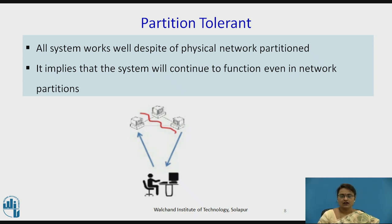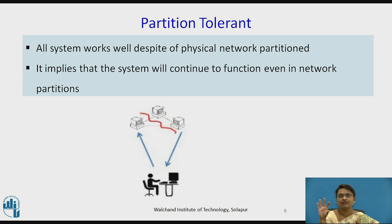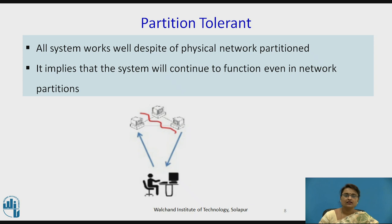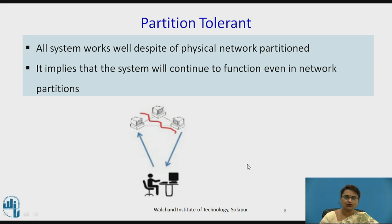Next comes Partition Tolerance. Partition Tolerance means that whenever we are in a network, the network may be partitioned or may break in between. Your distributed environment may be cut into different parts — few systems at one partition and few at another. This is called a network partition. But even if a network partition occurs, the system has to work. That system is called partition tolerant — it continues to function despite network partitions.